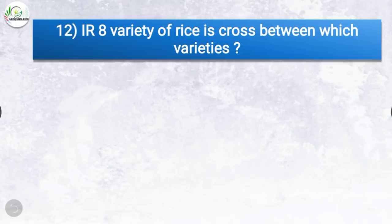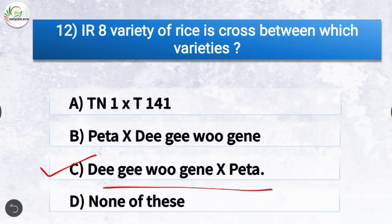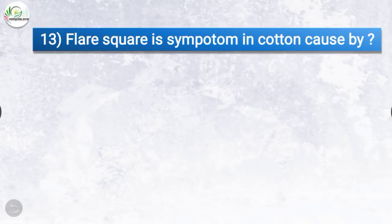Question number 12: IR8 variety of rice is crossed between which varieties? The correct answer is option C, DG Wujin and Peta. IR8 variety of rice is crossed between DG Wujin and Peta.